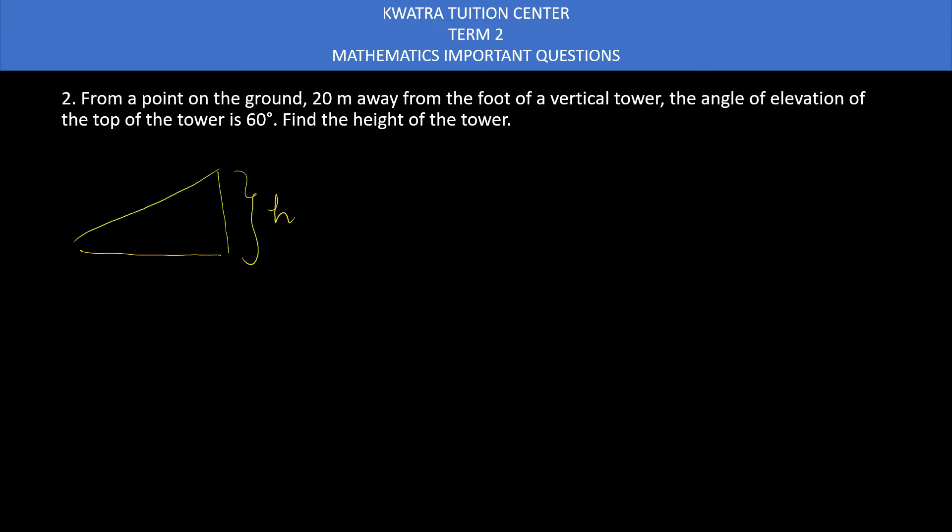And then they are saying the angle of elevation created is 60 degrees. Then we have to find the value of the height of the tower. So how will you do this one? You have to find with respect to this.